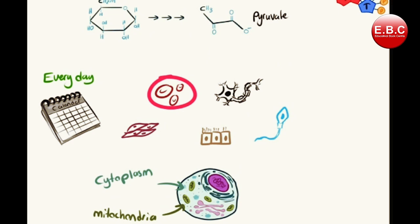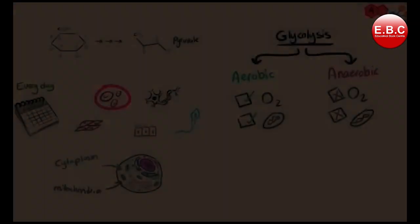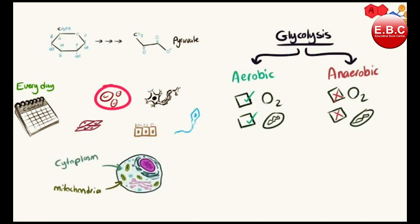So what happens in glycolysis? Cells break down sugar, that is glucose, which is a six-carbon molecule, into a three-carbon energy-rich molecule called pyruvate or pyruvic acid. This process happens every day in our cell's cytoplasm. Cells without mitochondria, such as red blood cells, rely solely on glycolysis to produce energy.